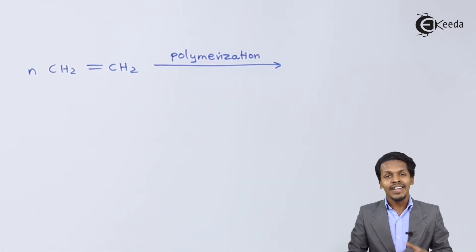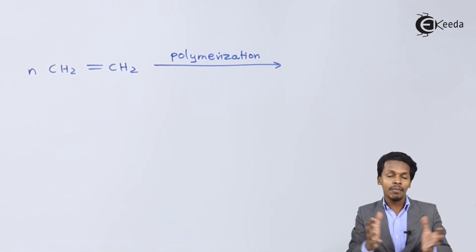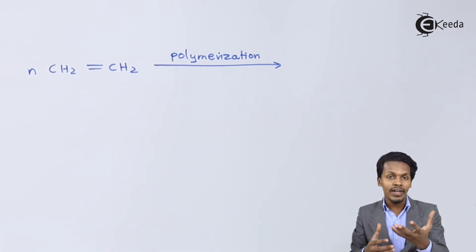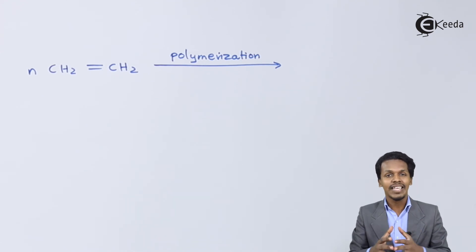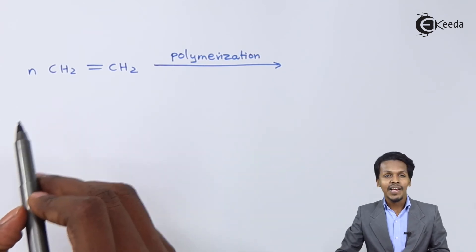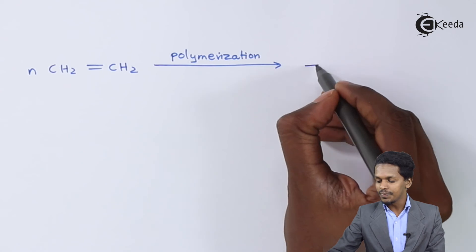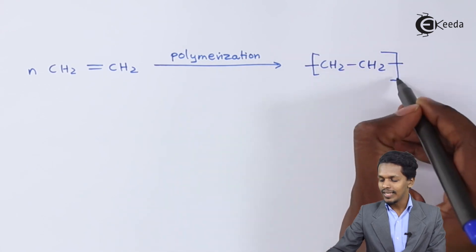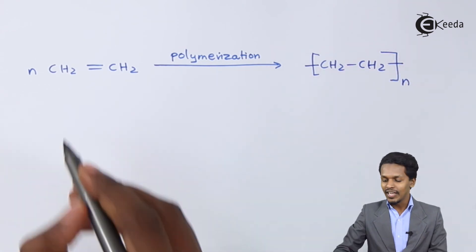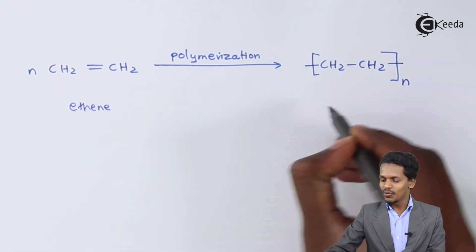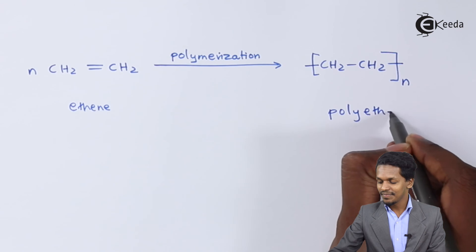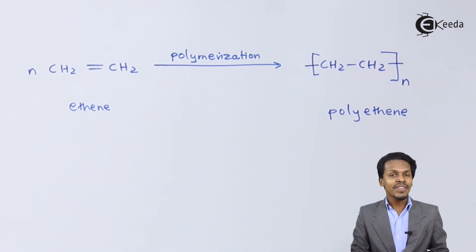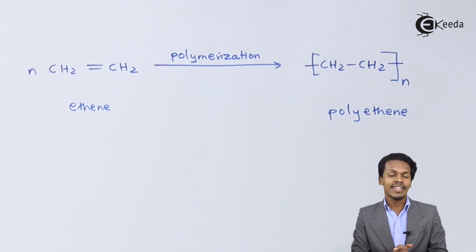Polymerization is the process of converting a monomer, or n times of monomer, to a polymer, which has a higher molecular mass and a bigger structure compared to that of the monomer. In this case, the ethene monomer is converted into –CH₂–CH₂–, and this CH₂ unit is nothing but a repeating unit. That is how we convert ethene into polyethene, which is an example of a polymer.